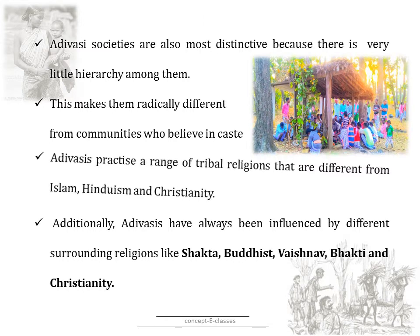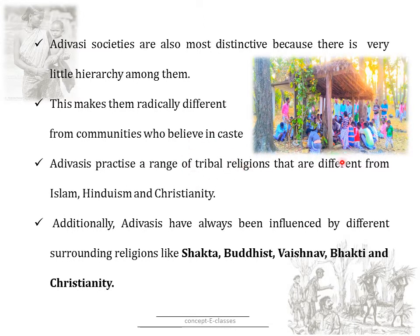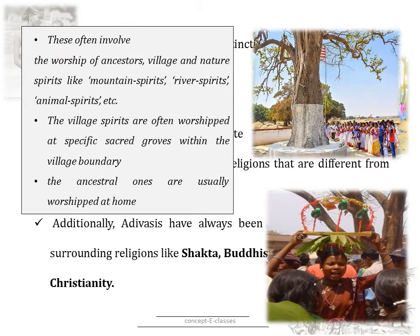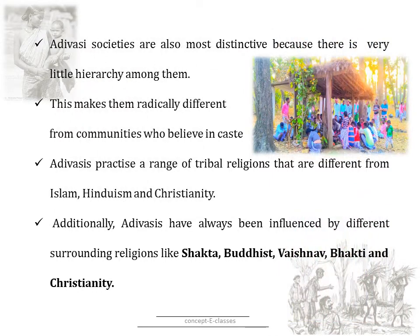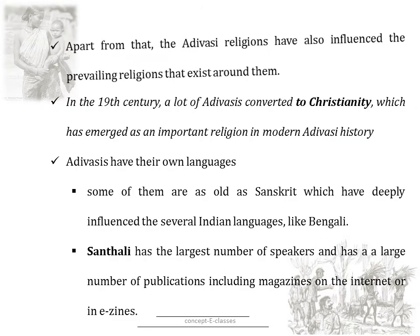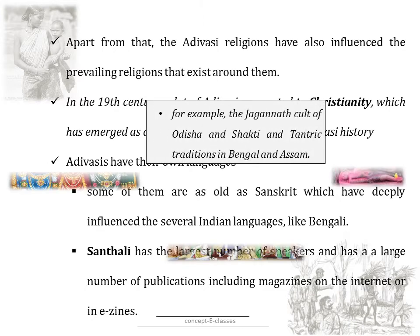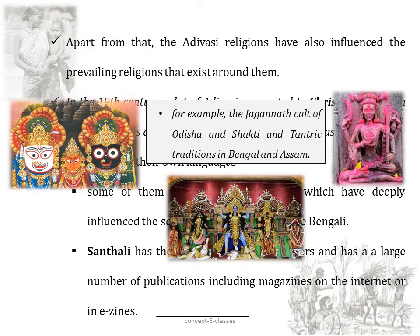Adivasis practice a range of tribal religions different from Islam, Hinduism and Christianity. They often involve the worship of ancestors, village and nature spirits like mountain spirits, river spirits, animal spirits, etc. Village spirits are worshipped at specific sacred groves within the village boundary, and ancestral ones are usually worshipped at home. Additionally, Adivasis have always been influenced by different religions around them like Shakta, Buddhist, Vaishnava, Bhakti and Christianity. Many Adivasi religions have also influenced surrounding religions — for example, the Jagannath cult of Odisha, and the Shakti and Tantric traditions in Bengal and Assam.